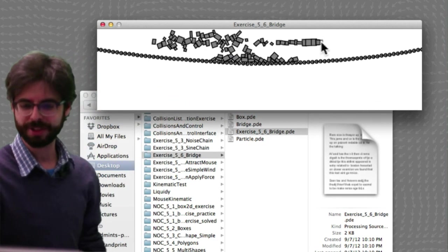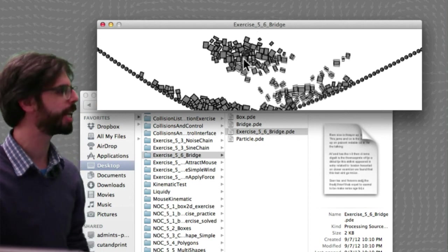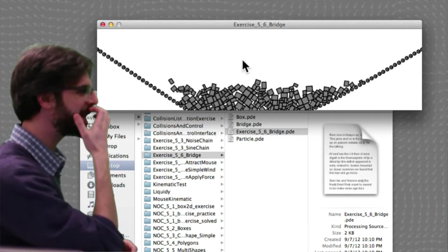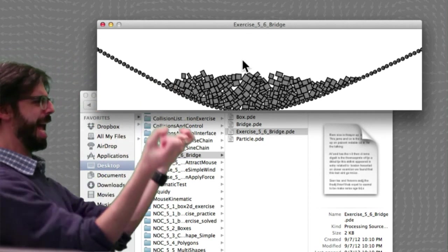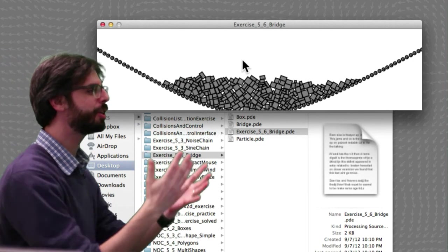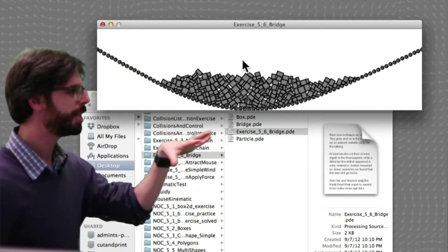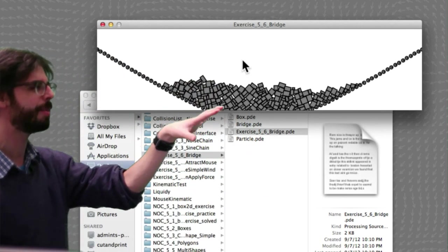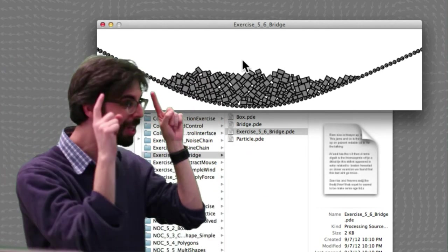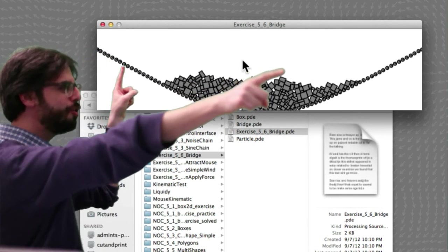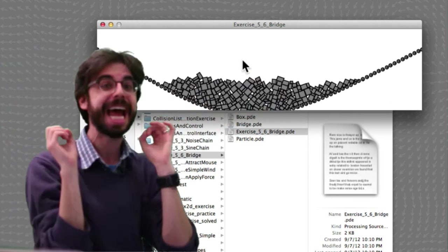And you can see here, we have this kind of springy elastic bridge that I can create all these box objects that get piled up and it's hanging and waiting there. So this is something you might think about doing. Obviously the answer is there in the GitHub repository, exercise 5.6. But as an exercise, you might try to create something like this.